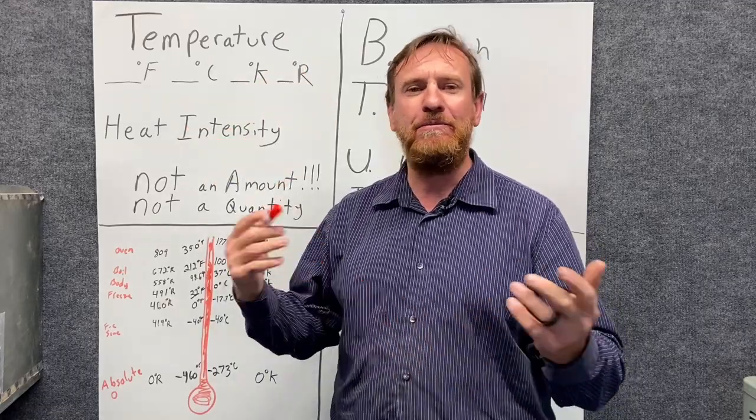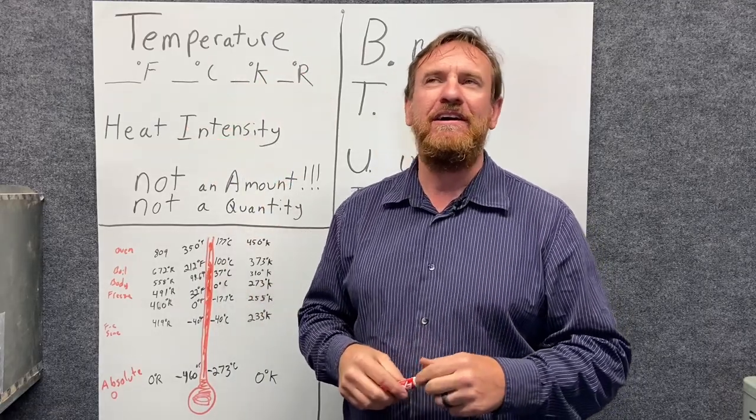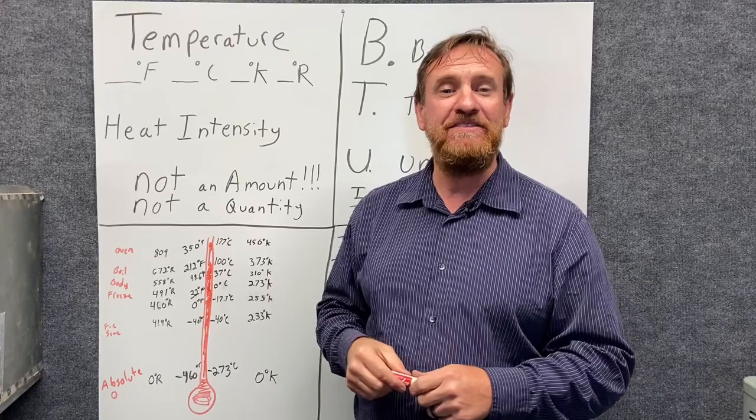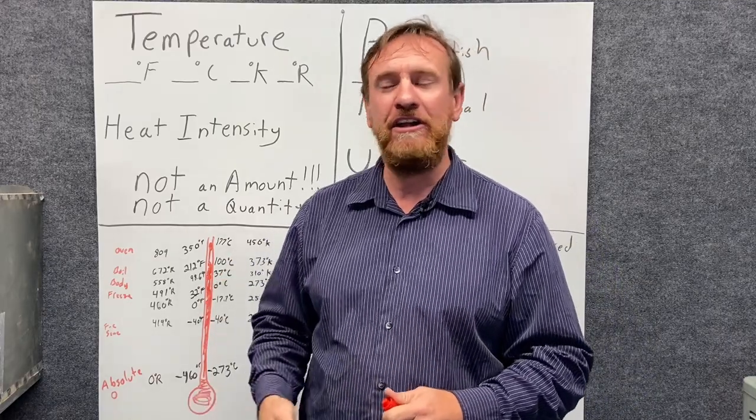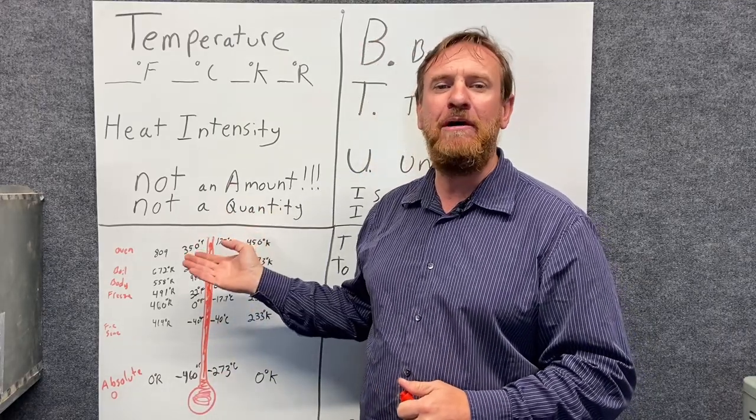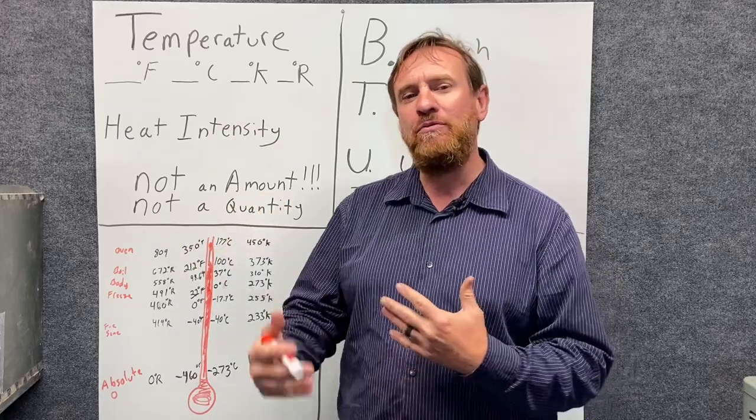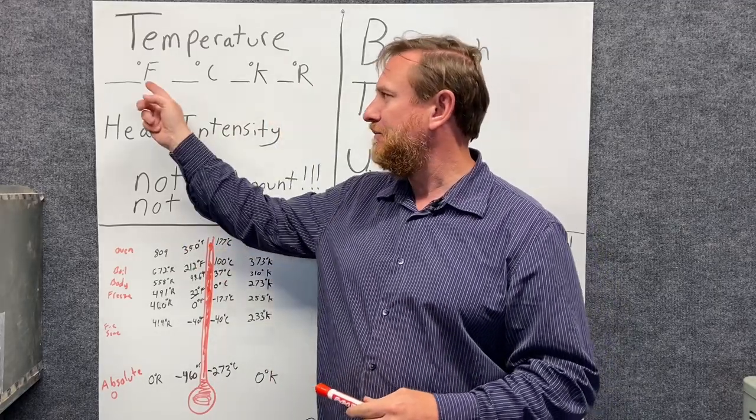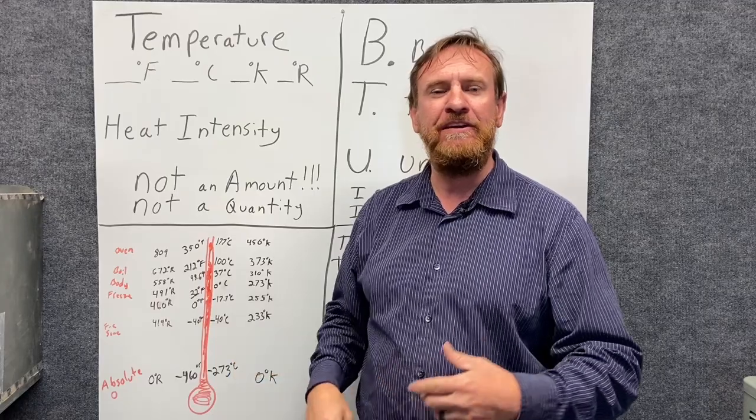Now this number can go on and on and on and up. We can get the number of the temperature that water will actually steam, will turn into a different substance. We get the temperature of stars. There's all kinds of numbers that go up and up and up through the scale. I'm just wanting you to realize that all these different numbers are the same point.